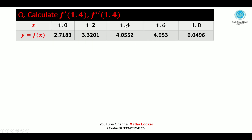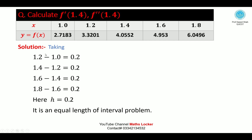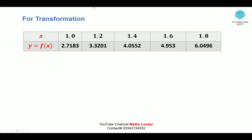Now we apply these formulas to the problem: calculate f′(1.4) and f″(1.4). The data is given in table form. First we check the interval length: 1.2−1.0=0.2, 1.4−1.2=0.2, 1.6−1.4=0.2, 1.8−1.6=0.2. The length is the same — it is an equal interval problem. We mark the center value and subtract the center value from each x value.